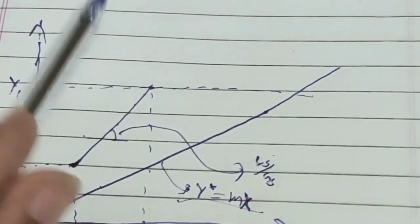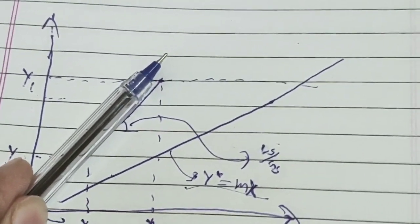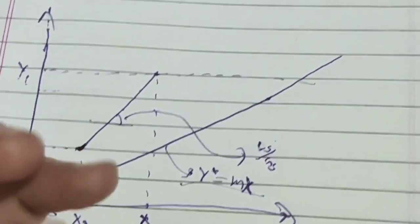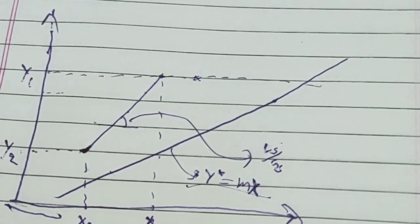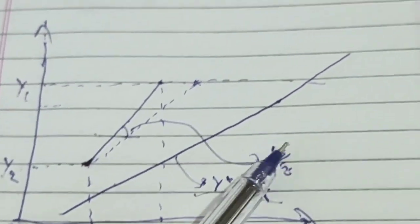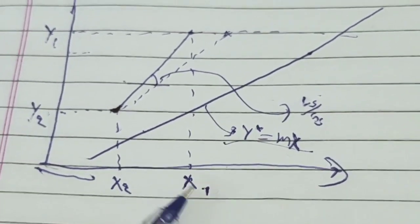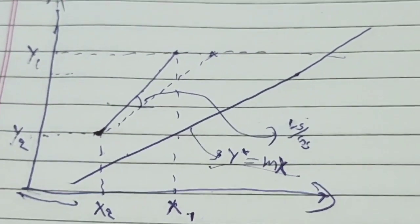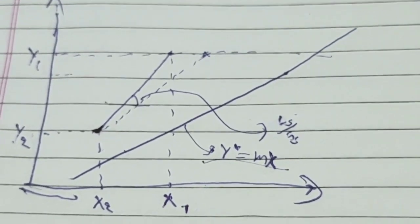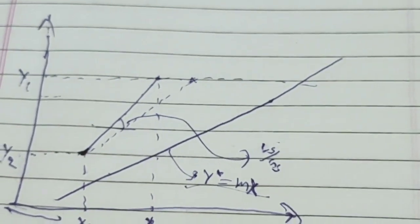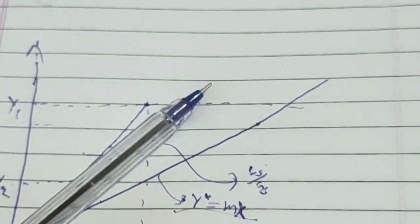The point where the operating line cuts the Y = Y1 line gives you X1, and X1 will vary depending on the slope. If I decrease the liquid flow rate, the slope decreases, the line rotates, and it cuts further along — so X1 changes. As you decrease the solvent flow rate, the composition of liquid coming out, capital X1, will increase.